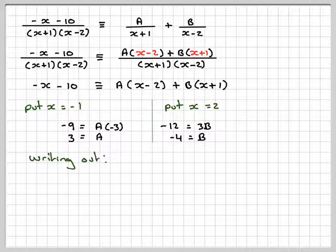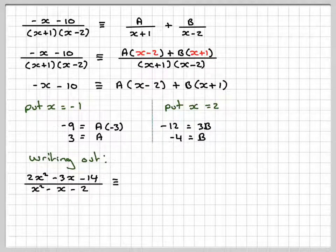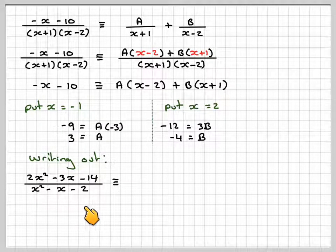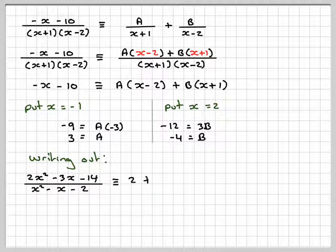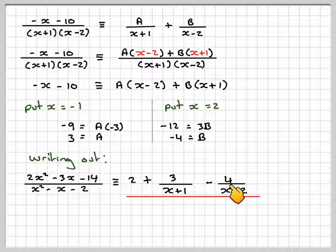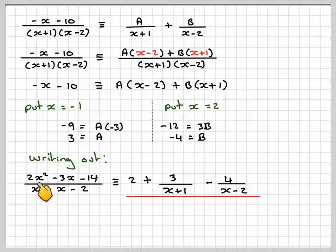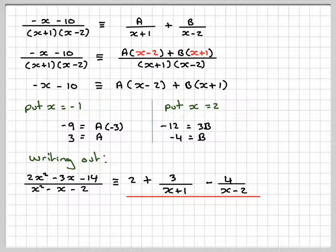Putting it all back together: the original fraction 2x squared minus 3x minus 14 over x squared minus x minus 2 equals 2 plus 3 over x plus 1, minus 4 over x minus 2. We must be careful in this case because what we have is an improper algebraic fraction — we must divide first before splitting into partial fractions. I hope you've understood, and thank you very much for watching.